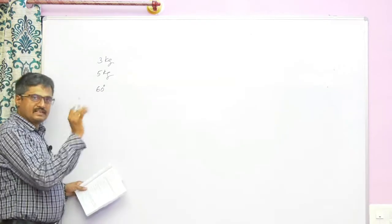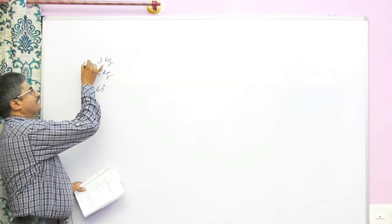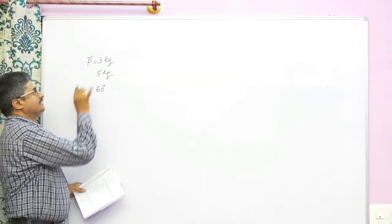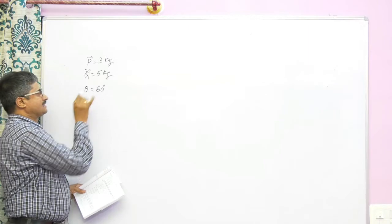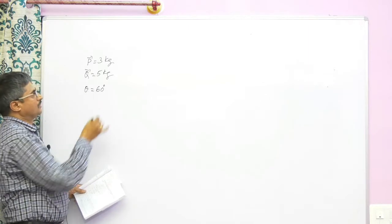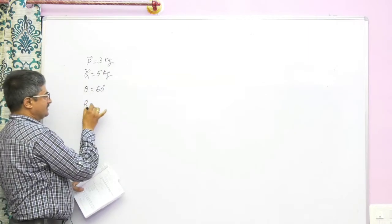Magnitude of the resultant. Two vectors are given: vector p is 3 kg, vector q is 5 kg. The angle between them is 60 degrees. So therefore we have to find resultant r.